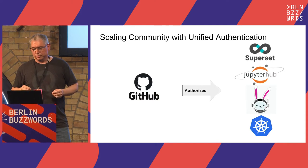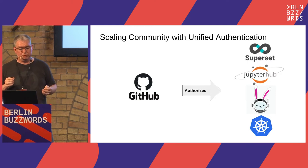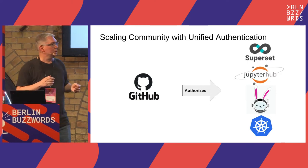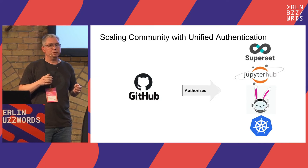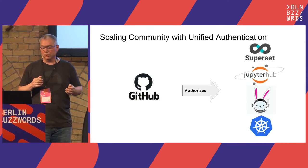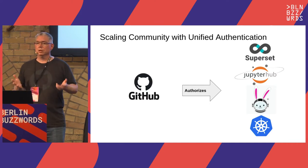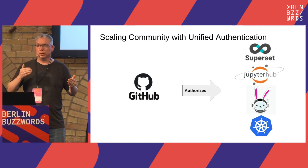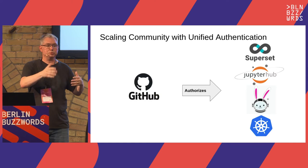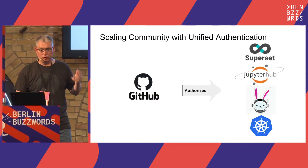Another thing that helps scale a community is unified authentication. Your GitHub authentication as a community member automatically authorizes you for all those tools I just mentioned. It makes it really easy — we don't have to give you separate authentication for all these different tools. We just call out to GitHub auth, and it's really quite nice.